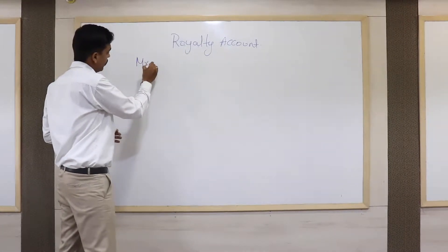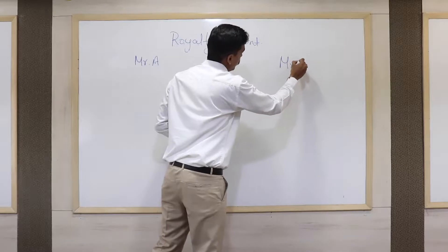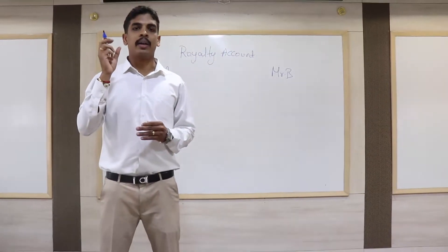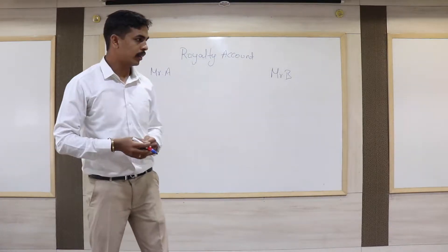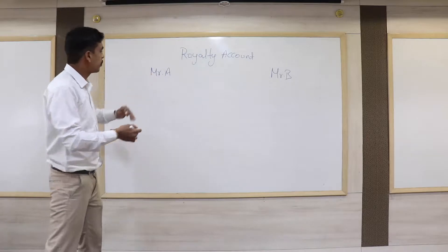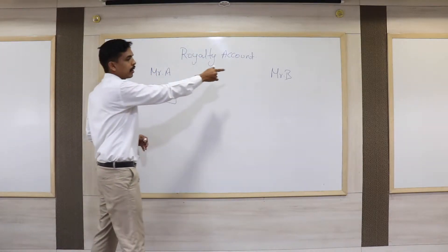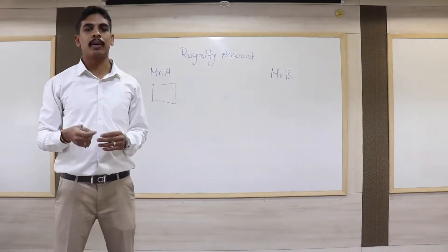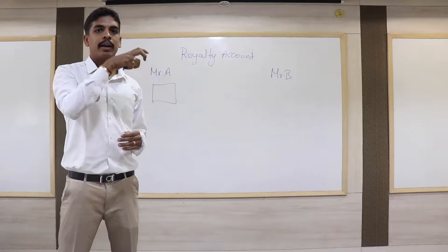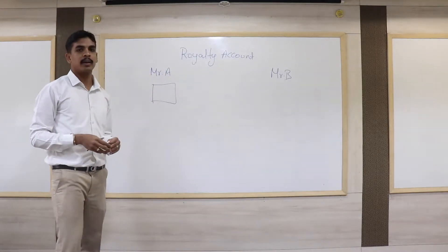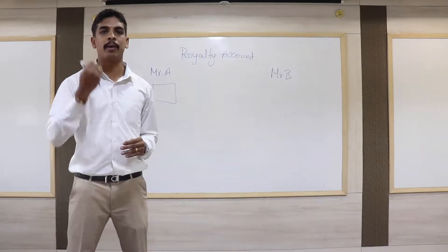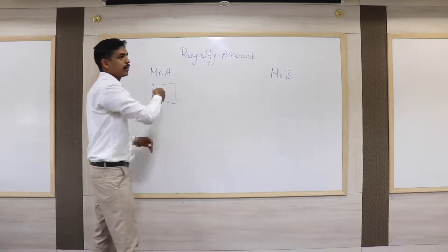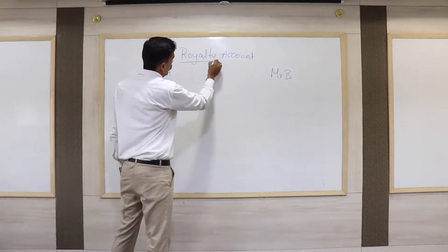There are two persons, Mr. A and Mr. B. Mr. B is unemployed and he doesn't have any financial investment to start any business. Mr. A is employed in a good company and he owns a lot of land. Both are friends. One day Mr. B approaches Mr. A and requests him to give his land so that Mr. B, being unemployed, can start mining. Mr. A agrees to give the land on the basis that Mr. B has to pay some amount for utilizing the right of using that land. The amount that Mr. B pays to Mr. A for using the right of land is called Royalty.